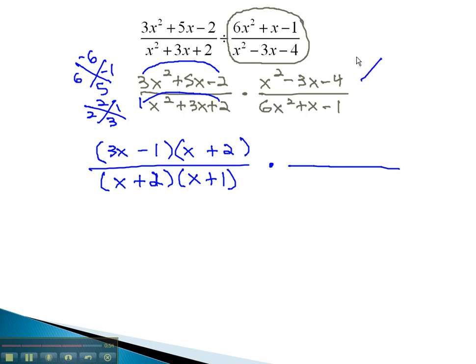On the right side, in the numerator, we're multiplying to negative 4, and adding to negative 3. This is negative 4 and positive 1. Because of the 1 in front of the x squared, we can factor it to x minus 4, x plus 1.